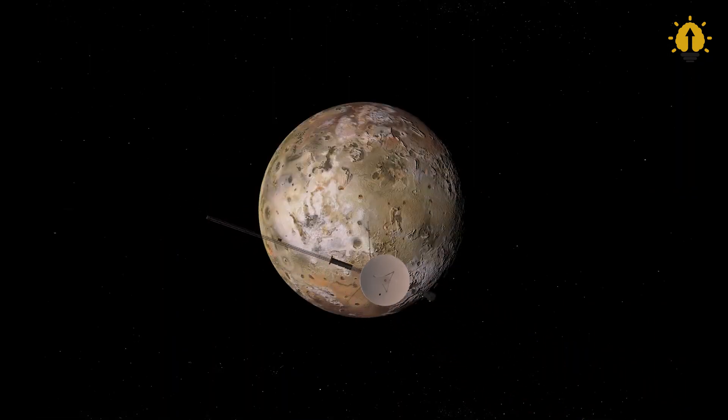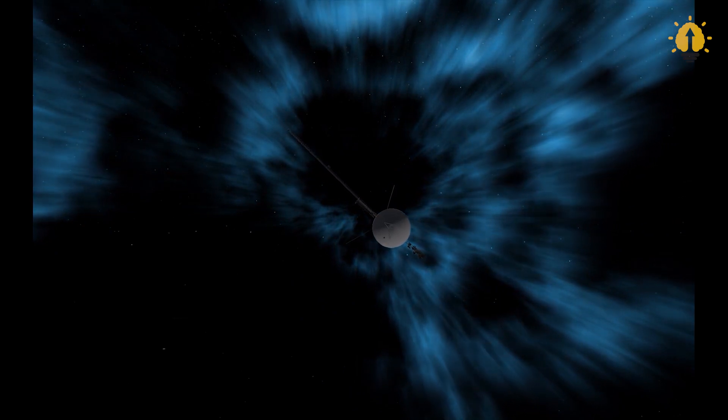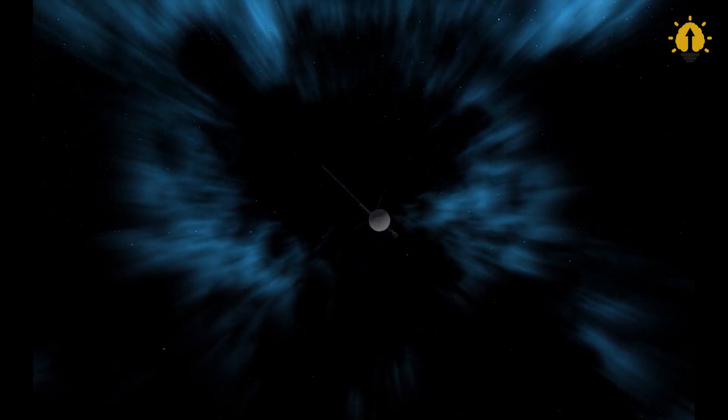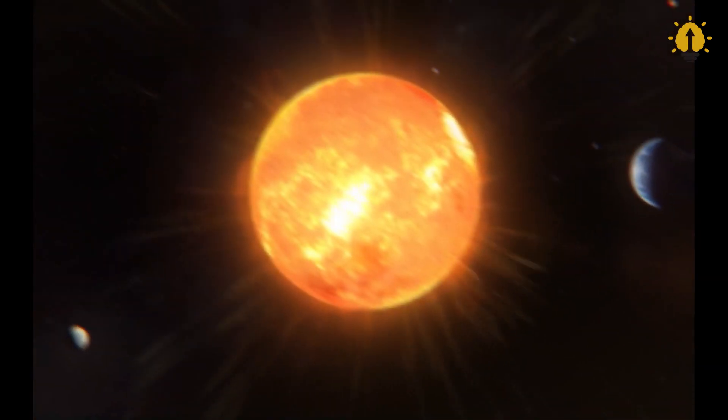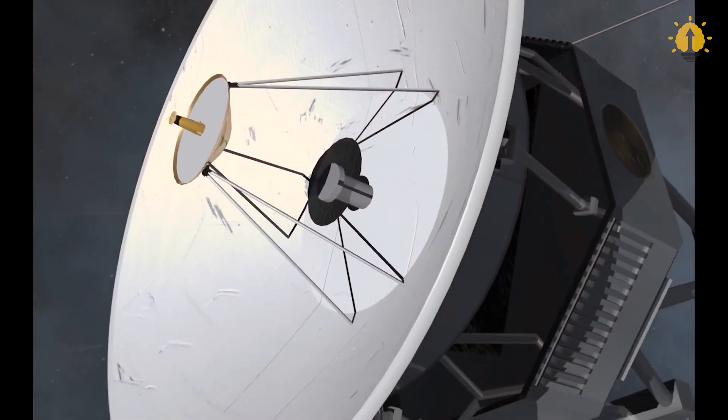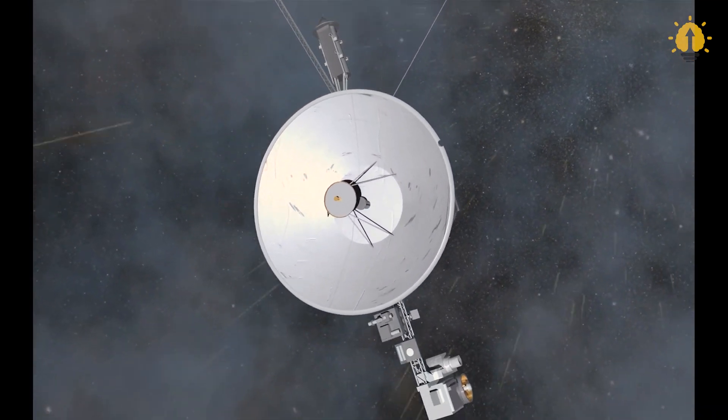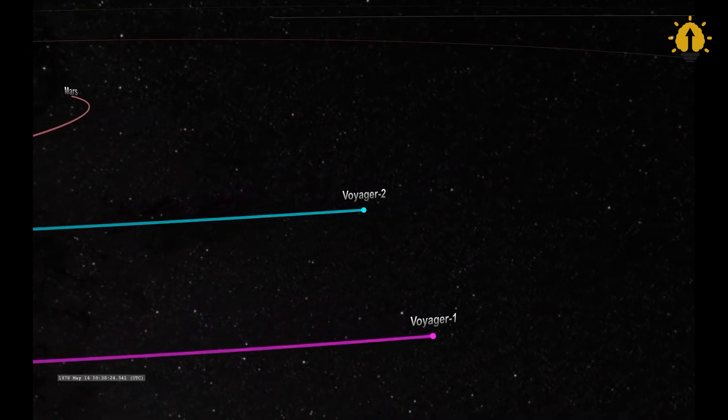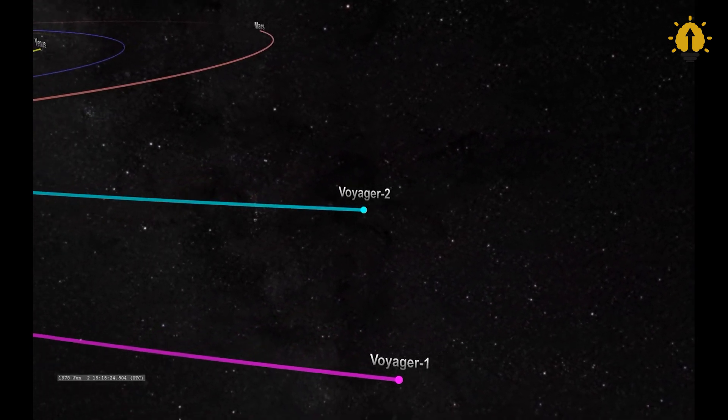Their journey into interstellar space is now beyond the Sun's sphere of influence and into the uncharted territory of the galaxy. They are the first objects created by humans to do so, and they will continue to hold this distinction for at least a few more decades. Overall, not a bad record, given that the Voyager missions were initially only intended to last four years.